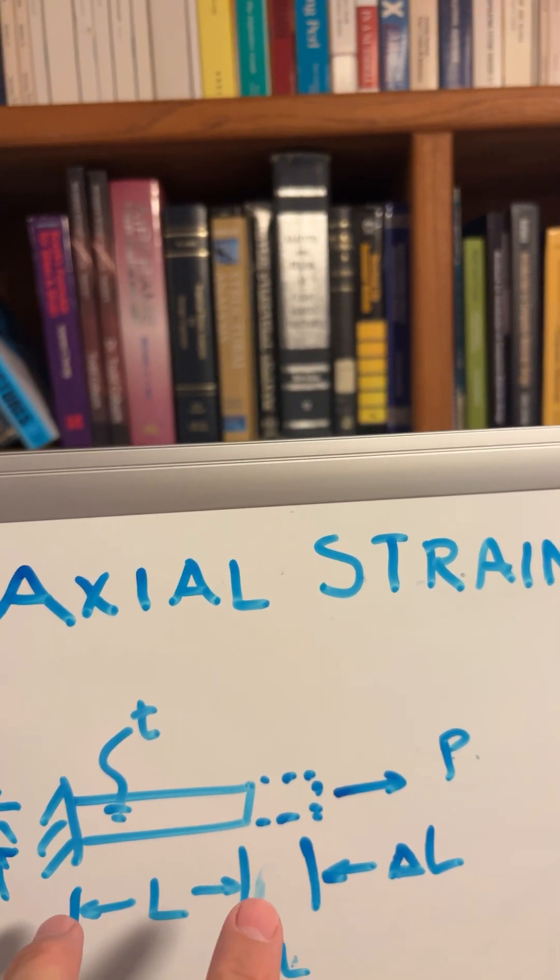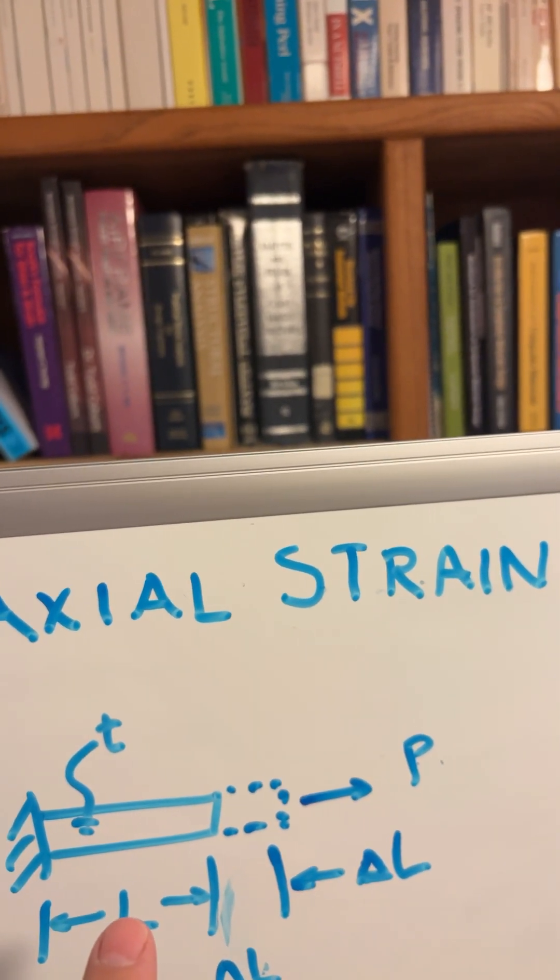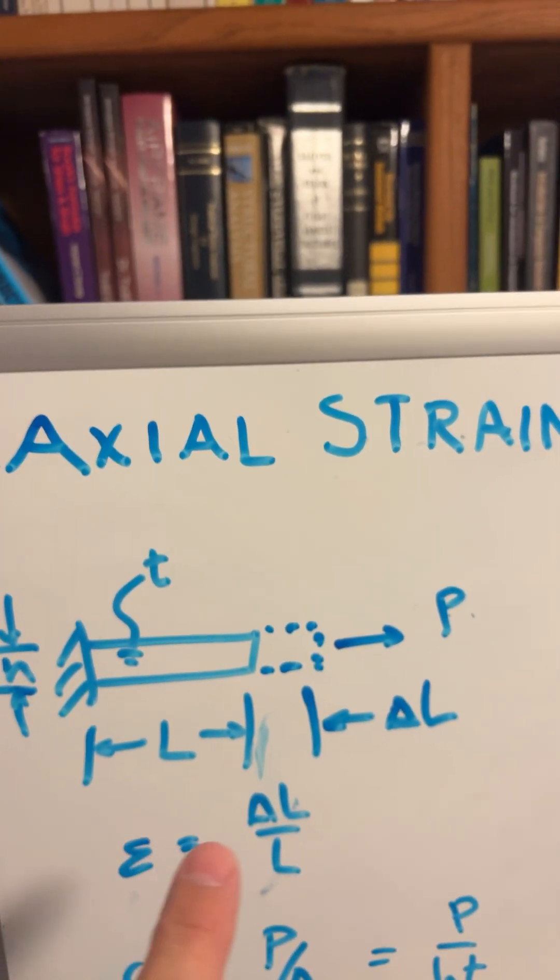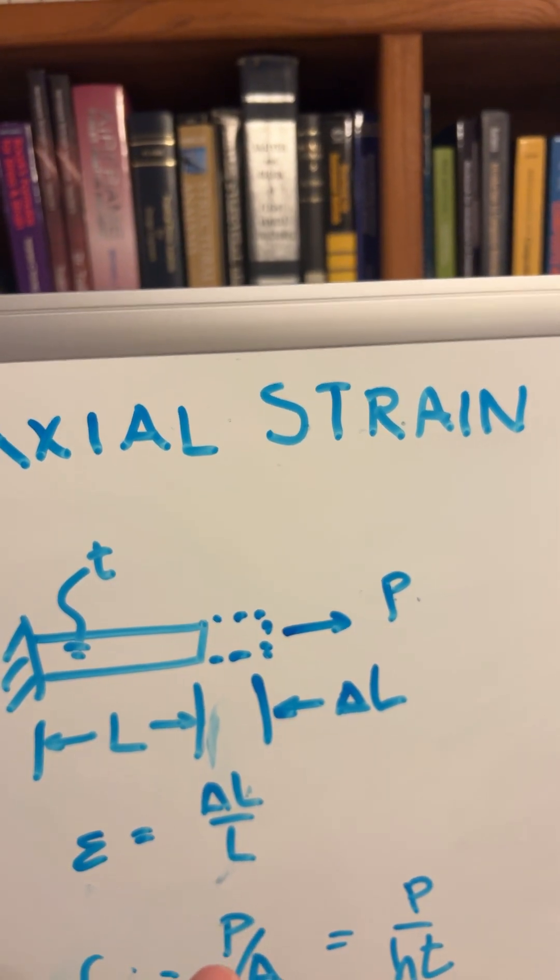divided by original length L. You'll notice the force, the length that's stretching, and the deflection are all in the same direction. Our strain is delta L over L. That is axial strain, also called normal strain.